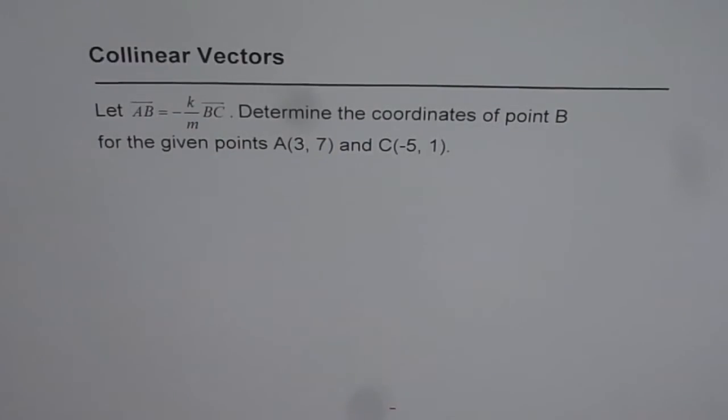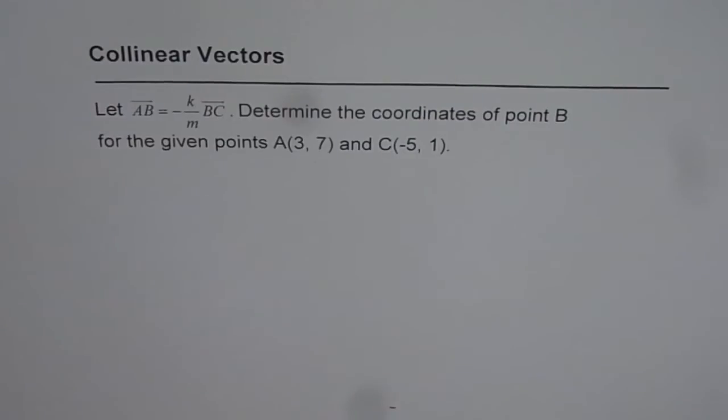Collinear vectors. Let AB equals minus K over M times BC. Determine the coordinates of point B for the given points A(3,7) and C(-5,1).